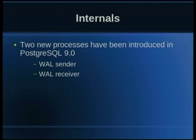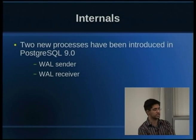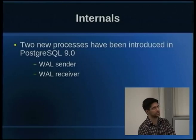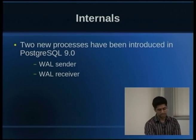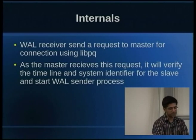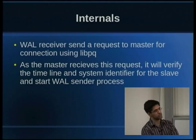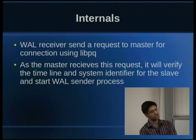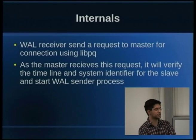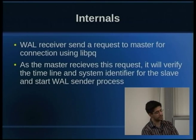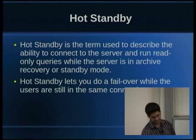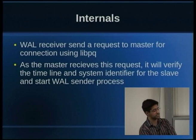Looking at the internals: with streaming replication, two new processes were introduced in Postgres 9.0. One is the WAL sender, and the other is the WAL receiver. You can see those processes when you do a PS and look for the Postgres processes. The WAL receiver uses libpq to send a call to the master server requesting to start streaming replication. Once the master gets that request, it starts the WAL sender process, which sends all the replication logs from the transaction log files to the slave servers.